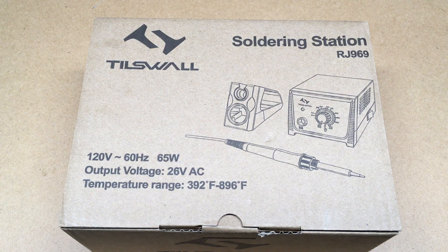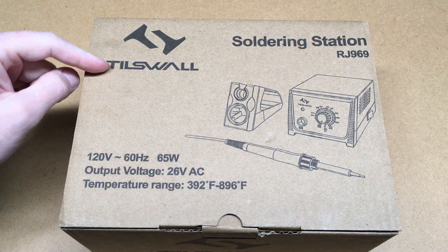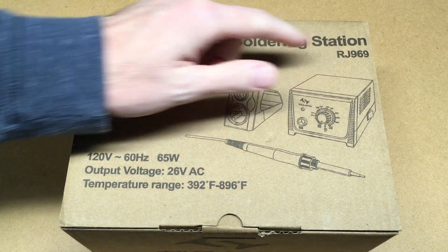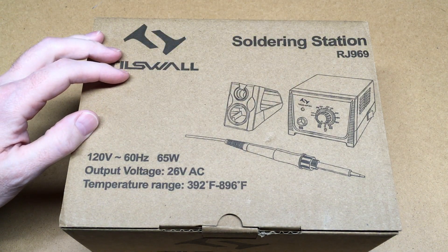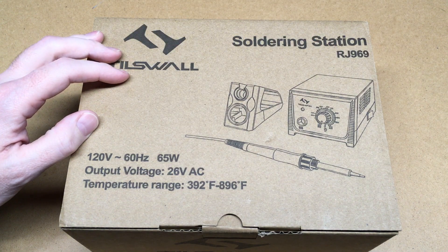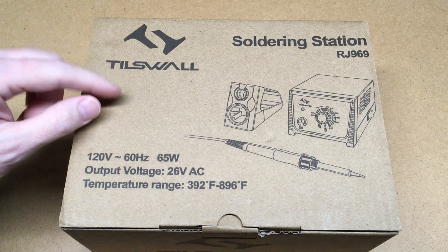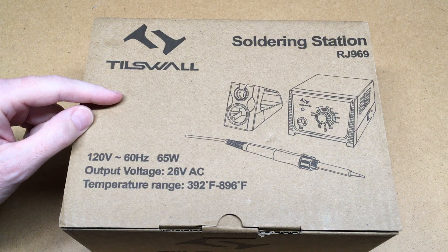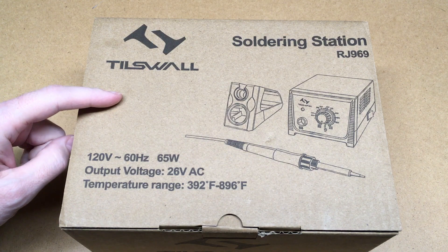Welcome. In this video I'm taking a look at this Tiswall soldering station, the RJ969. This was provided to me by the distributor, but they're not compensating me for this video and they're not reviewing it before I post it. If you're interested, I'll put a link in the description on Amazon. If you use that link, it helps me out a little bit and doesn't cost you anything extra.